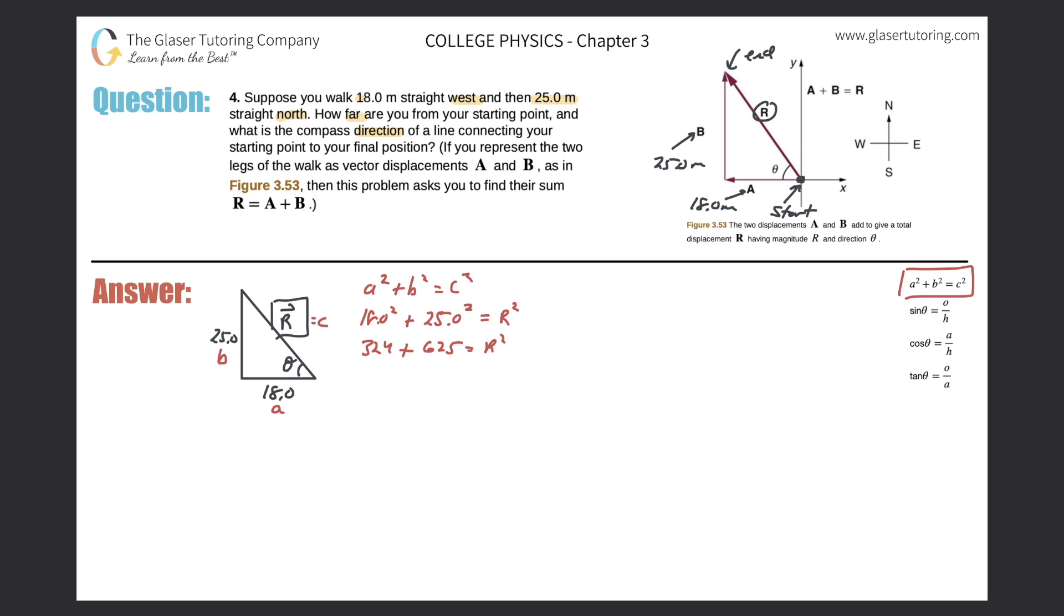Now all we have to do is just add those two values together. So 324 plus the 625—that's going to equal 949, that's equal to R squared. Now to find the R we have to take the square root, so we're going to be left with R is equal to square root of 949 and three sig figs again, so it's going to be 30.8 meters.